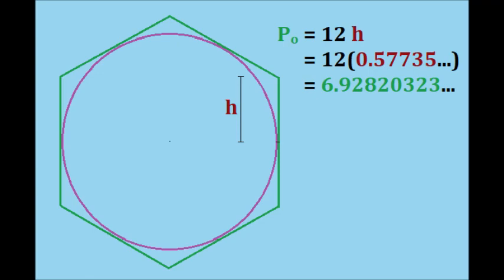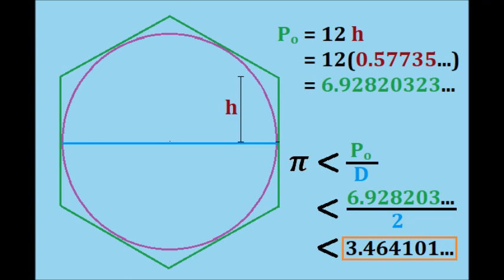The hexagon has six sides, so the total perimeter is 12 times h. This comes out to be approximately 6.928, as seen in green. To find pi, we divide by the diameter, which is the same as last time, 2.